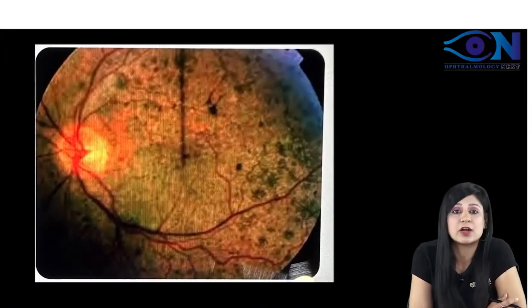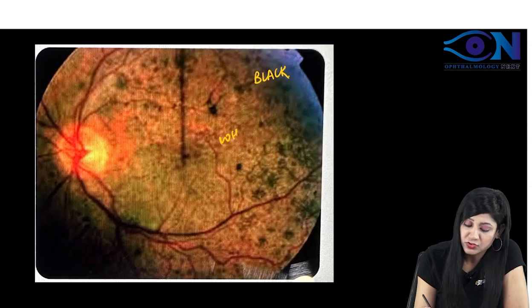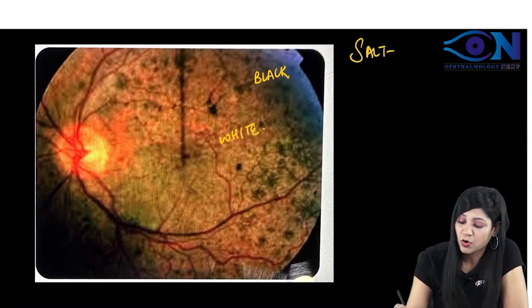Look at this, this is the picture of salt and pepper retinitis where you are getting black patches as well as white patches, alternating white and black. That is why it is called salt and pepper.